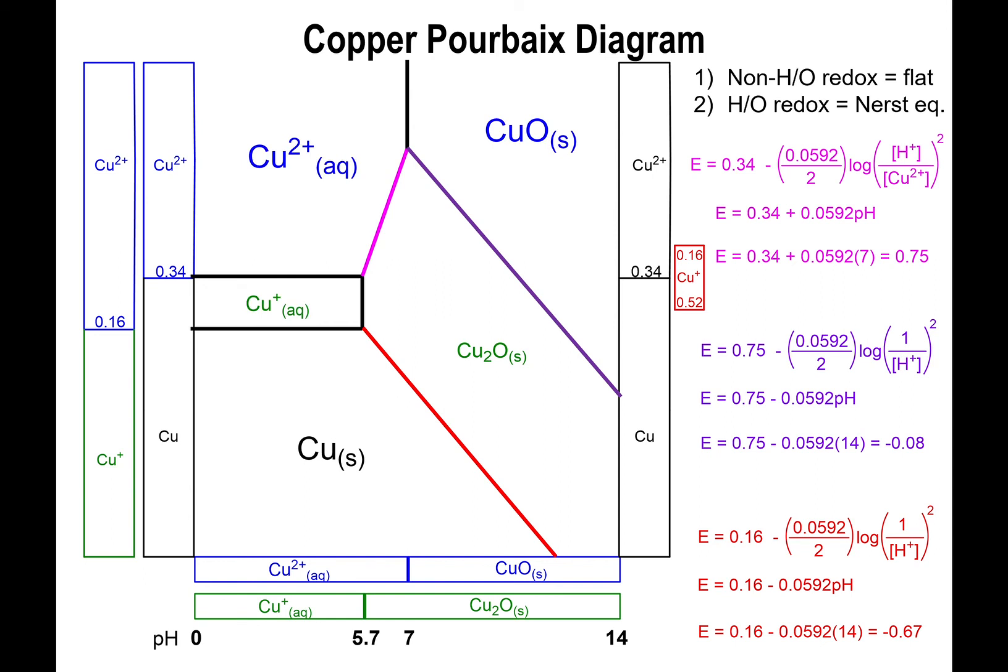All right, so altogether, this represents the entire Pourbaix diagram of copper. And it's a little bit more complicated because we have multiple species changing in identity depending on the pH. But as you can see, the process is still the same. You look at the horizontal boundaries. You look at the vertical boundaries. And you use the Nernst equation for non-standard conditions to determine the ultimate value of the potential.